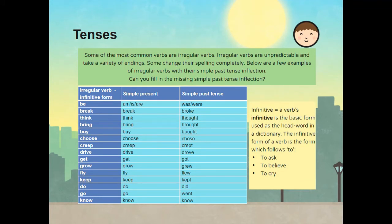An infinitive is a verb's basic form used as the head word in a dictionary. The infinitive form of a verb is the form which follows 'to.' Here are a few examples: to ask, to believe, to cry.